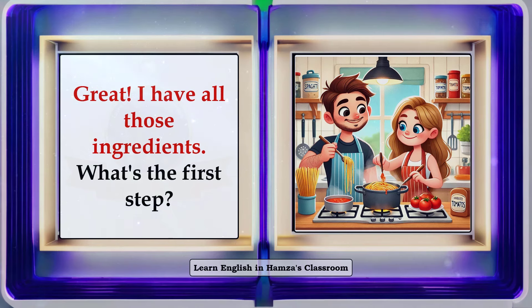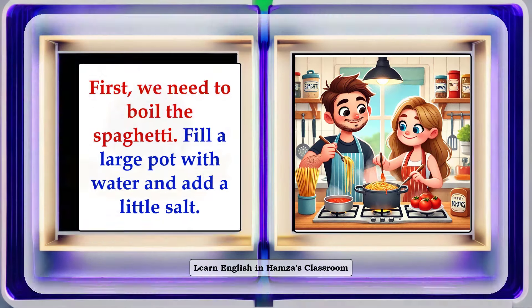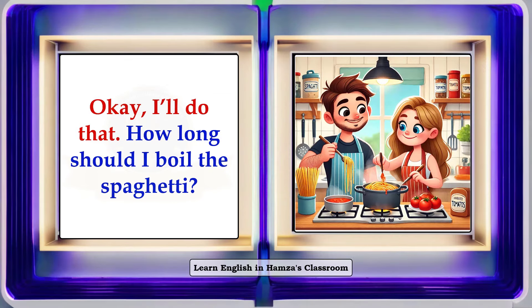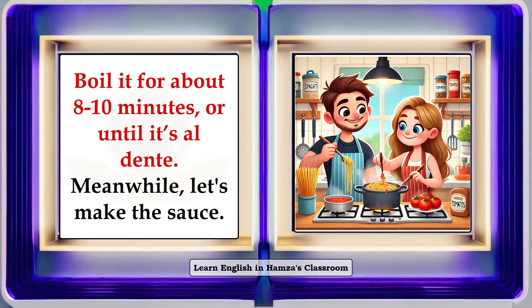Great! I have all those ingredients. What's the first step? First, we need to boil the spaghetti. Fill a large pot with water and add a little salt. Okay, I'll do that. How long should I boil the spaghetti? Boil it for about 8 to 10 minutes, or until it's al dente.